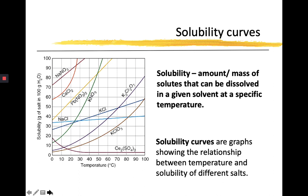Now, what we have shown you is a solubility curve. A solubility curve is a graph that shows the relationship between the temperature and solubility of different salts. Now, again, solubility is the amount or the mass of solutes that can be dissolved in a given solvent at a specific temperature.